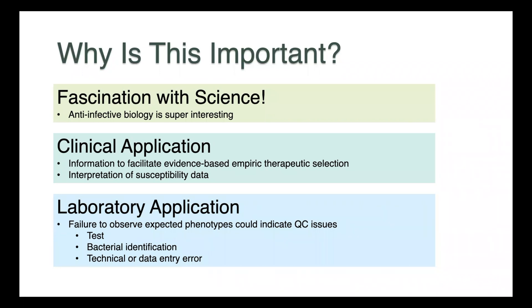For the laboratory, knowledge of intrinsic resistance can be a really powerful quality control tool. So failure to observe expected phenotypes could indicate that there was a problem with how the test was performed, how the bacteria was identified. So finding a Pseudomonas susceptible to penicillin, for instance, might indicate that you're not actually dealing with a Pseudomonas and you need to go back and re-identify and check the results. Could also indicate a technical error or something as simple as data entry.